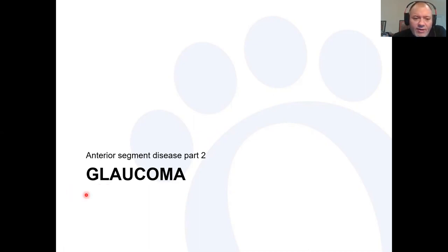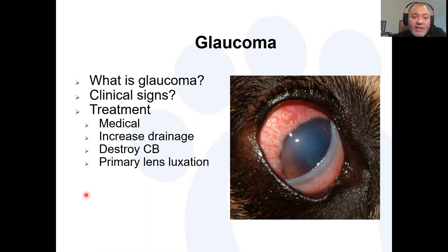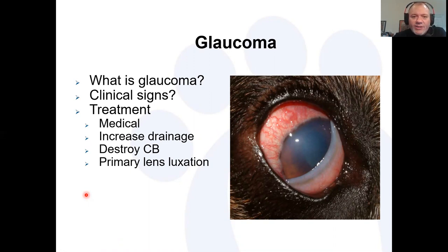Welcome back to the second part of this lecture on anterior segment disease. We're going to continue talking about glaucoma — what it is, the underlying pathology, the fundamental causes, and by understanding the anatomy, the challenges of treatment. We'll cover clinical signs, then medical and surgical treatment, and also primary lens luxation, which is a specific form of secondary glaucoma.